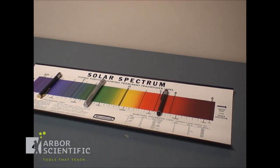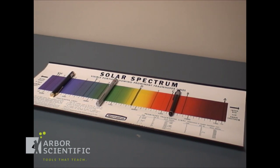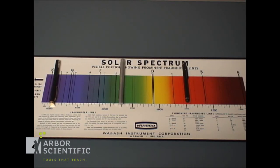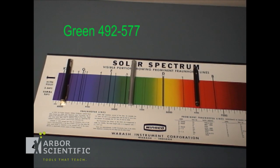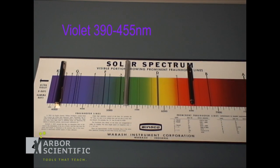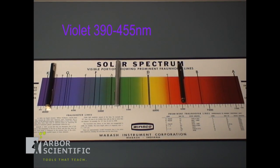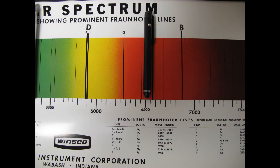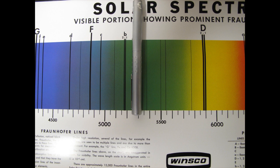As shown in Arbor Scientific's popular spectrum chart, red lasers have a wavelength of between 622 and 770 nanometers. Green can be between 492 and 577, and the violet wavelengths fall between 390 and 455 nanometers. These lasers shown here have specific wavelengths of 650 for the red, 532 for the green, and 405 for the violet.